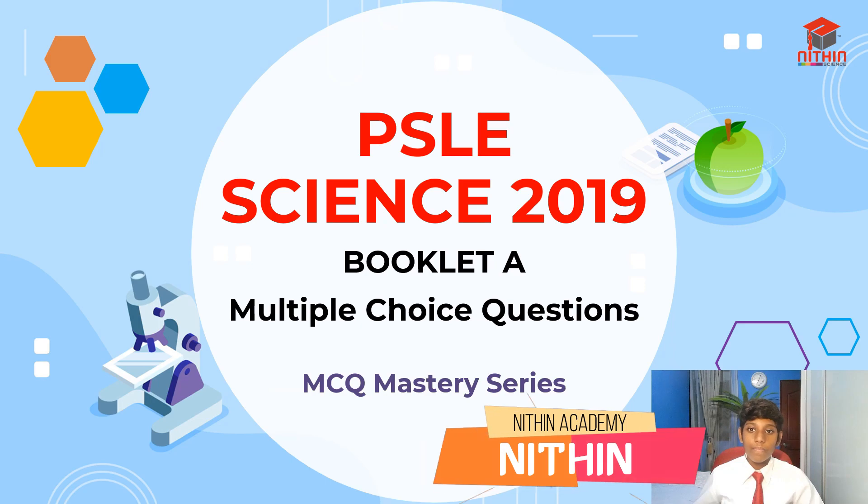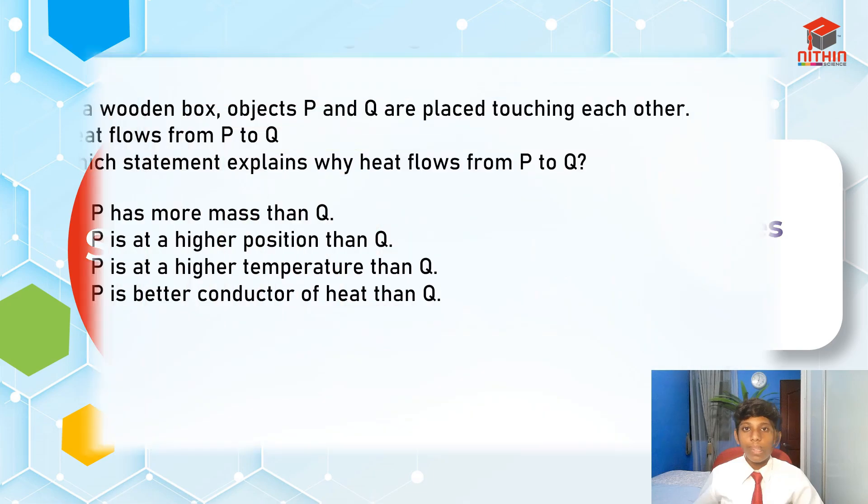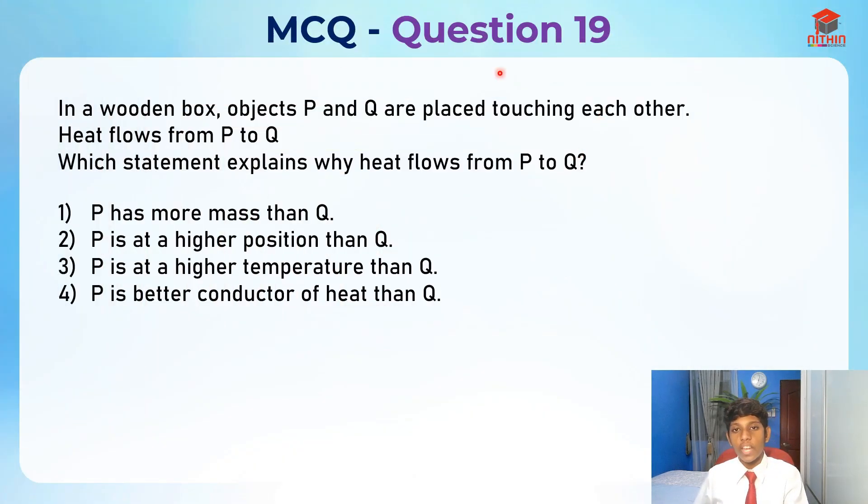This here is question 19. Let's read the question. In a wooden box, objects P and Q are placed touching each other. Heat flows from P to Q. Which statement explains why heat flows from P to Q?